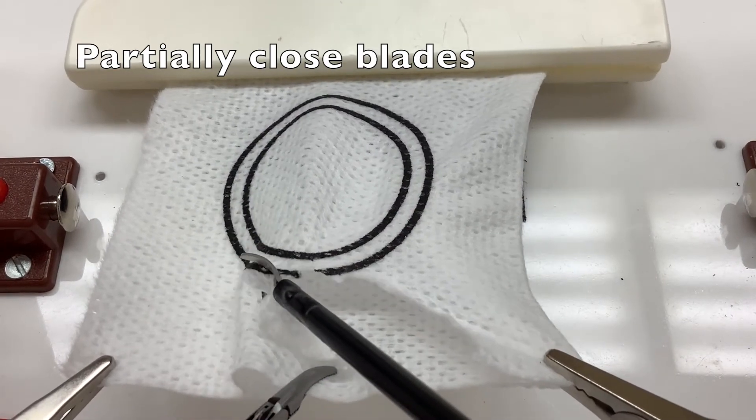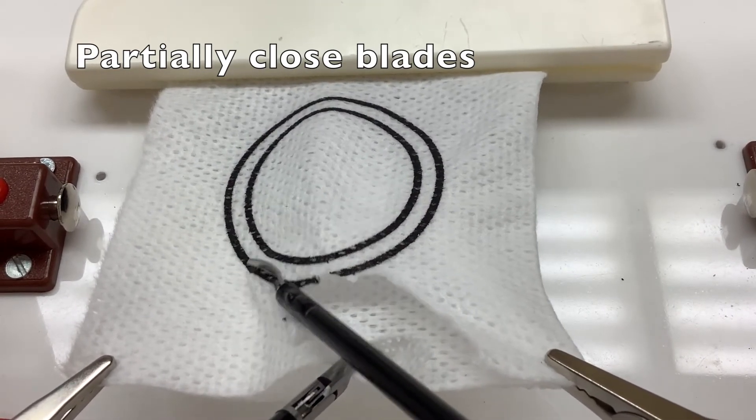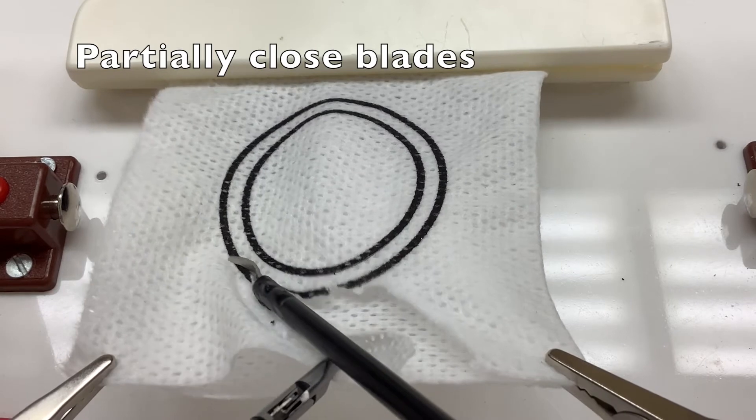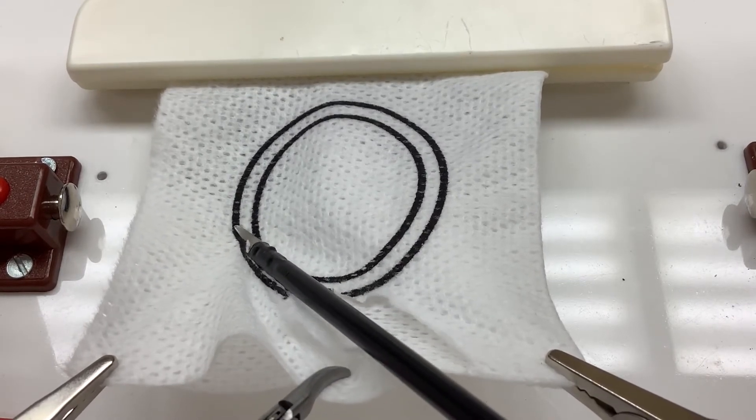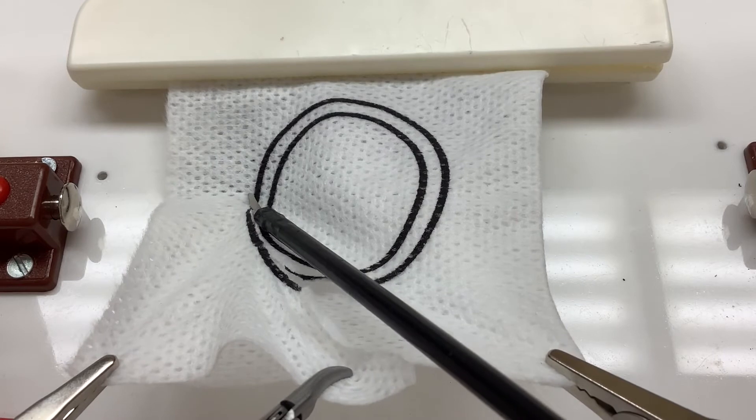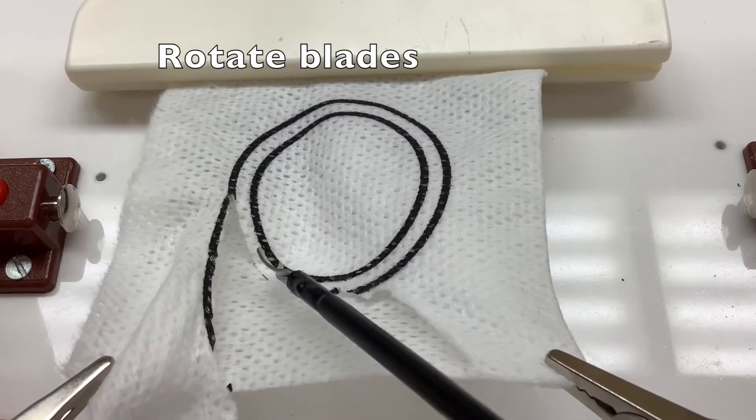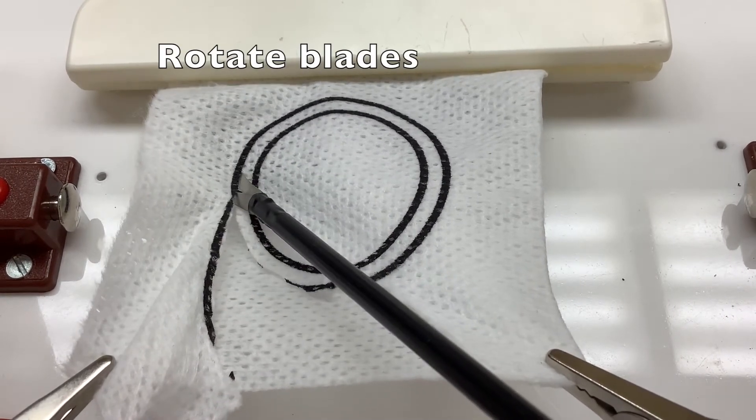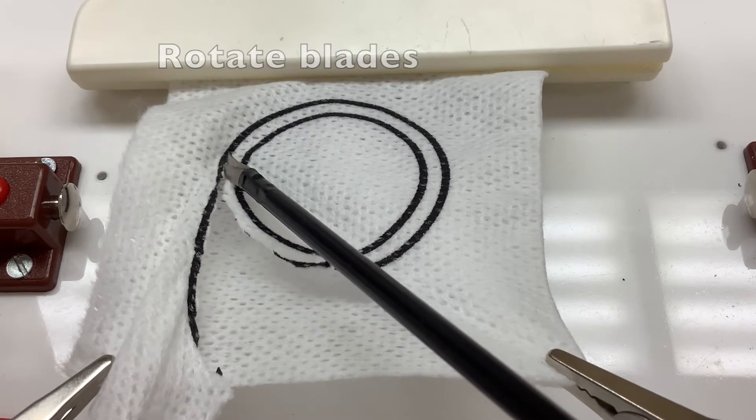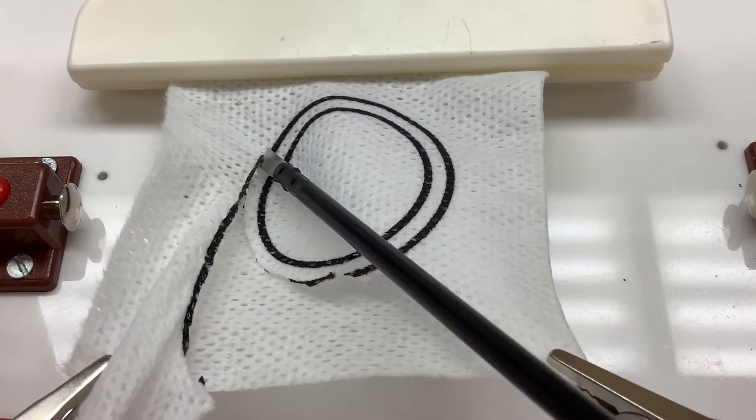Fully closing the blades causes the displacement of the scissors and results in jagged edges. The grasping hand plays an important role in maintaining proper tension in order to effectively cut. Also, use the grasping hand to manipulate the gauze and achieve ideal cutting angles.